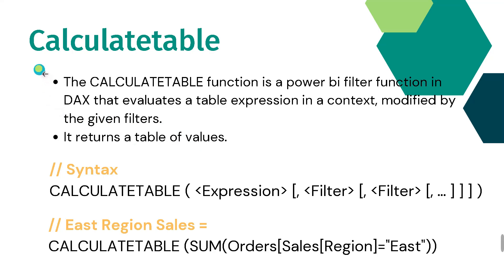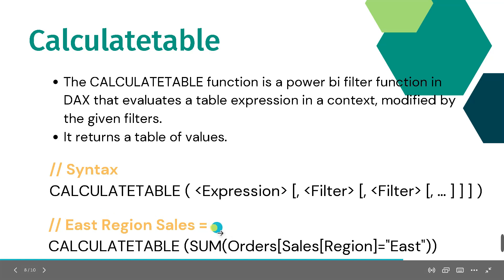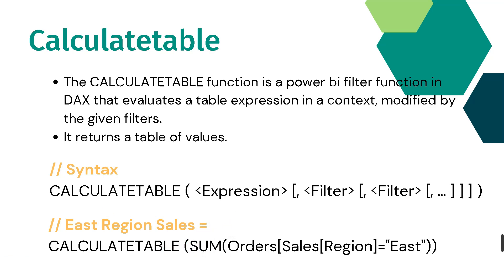CALCULATETABLE is used to evaluate a table expression in a context modified by given filters. For example, if you have a table with a hundred records and want to extract a sub-table based on some criteria or filters, you use CALCULATETABLE. Its syntax is: write CALCULATETABLE, then inside the bracket pass an expression and a filter.